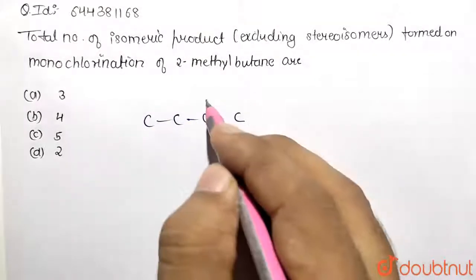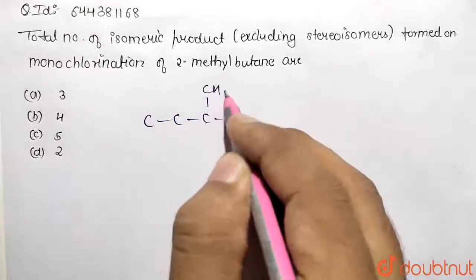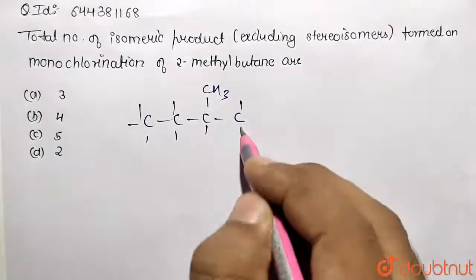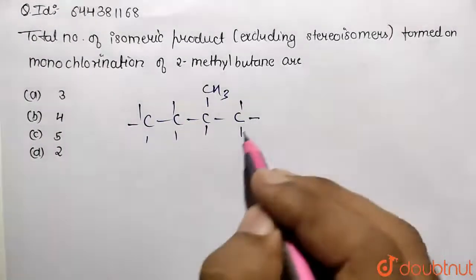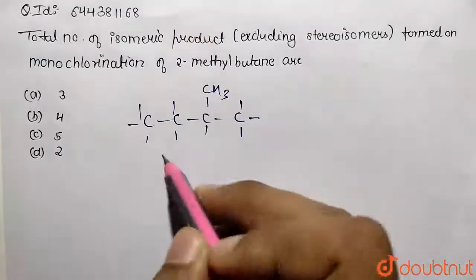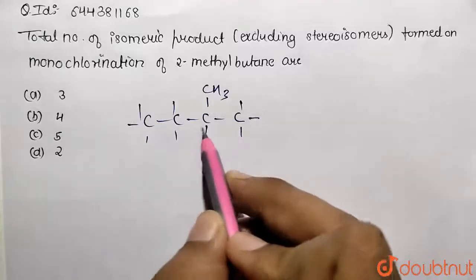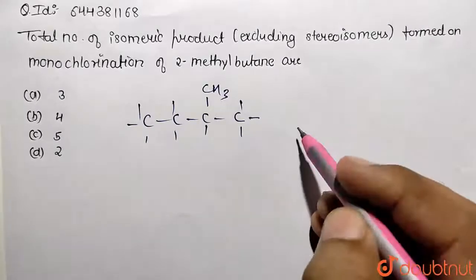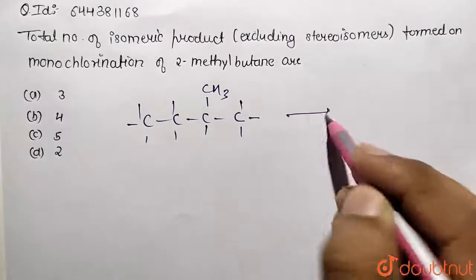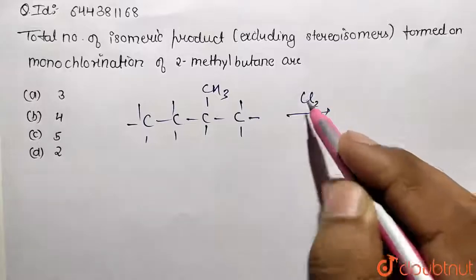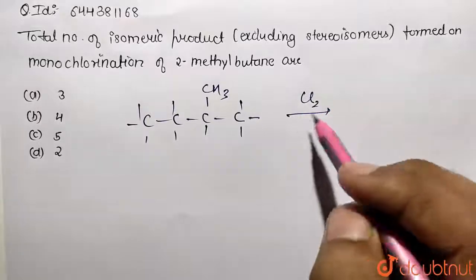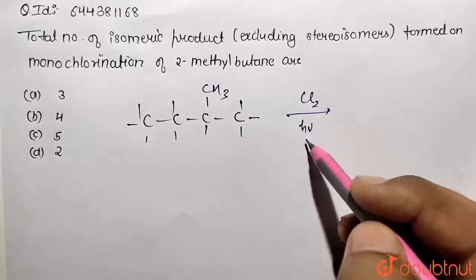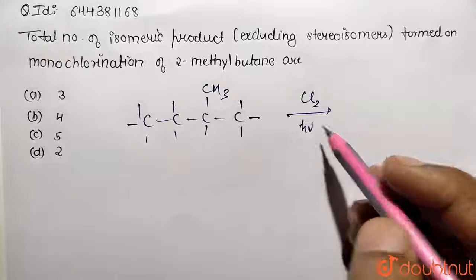We have a four-carbon chain carrying a methyl group on the second carbon. This is the structure of the given molecule, and these positions are satisfied using hydrogen so each carbon is tetravalent. Now we are performing the reaction of chlorination — monochlorination — in the presence of hν.